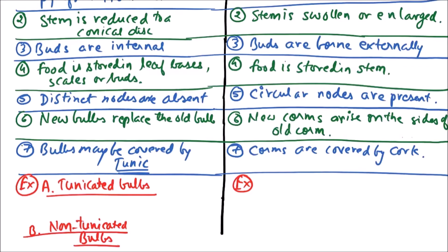Tunicated bulbs include Allium cepa, that is onion, while the non-tunicated bulbs include Allium sativum, that is garlic.